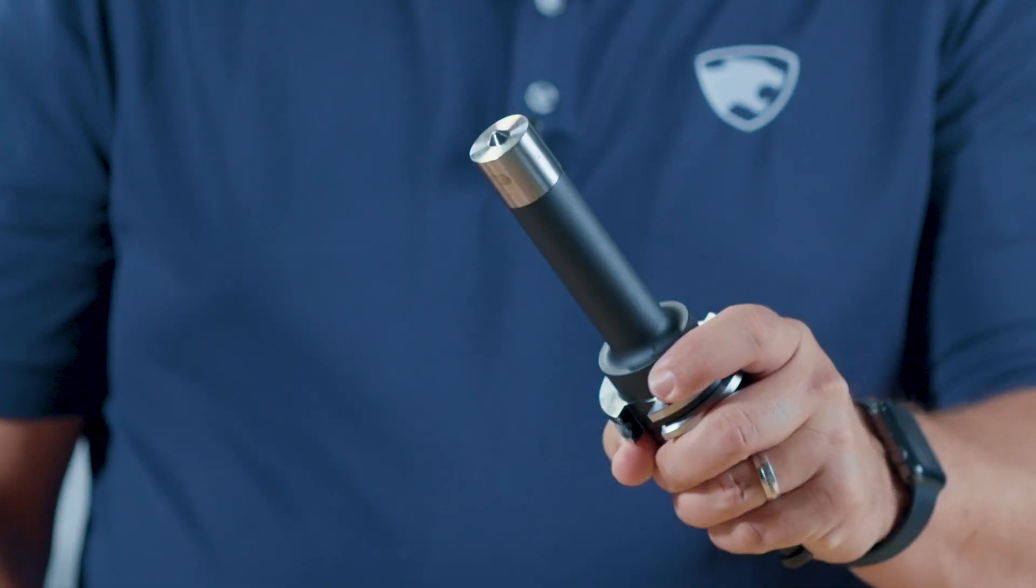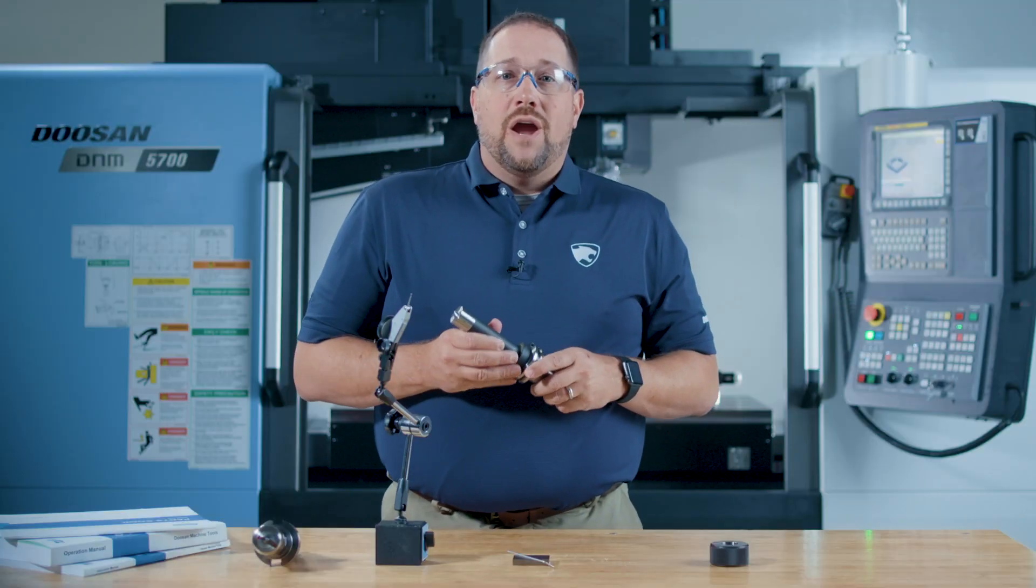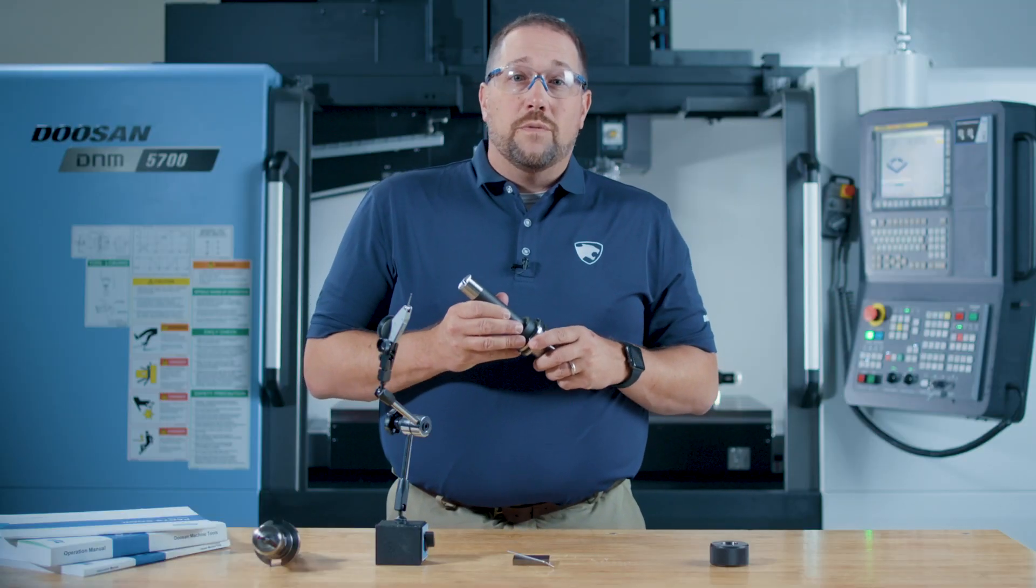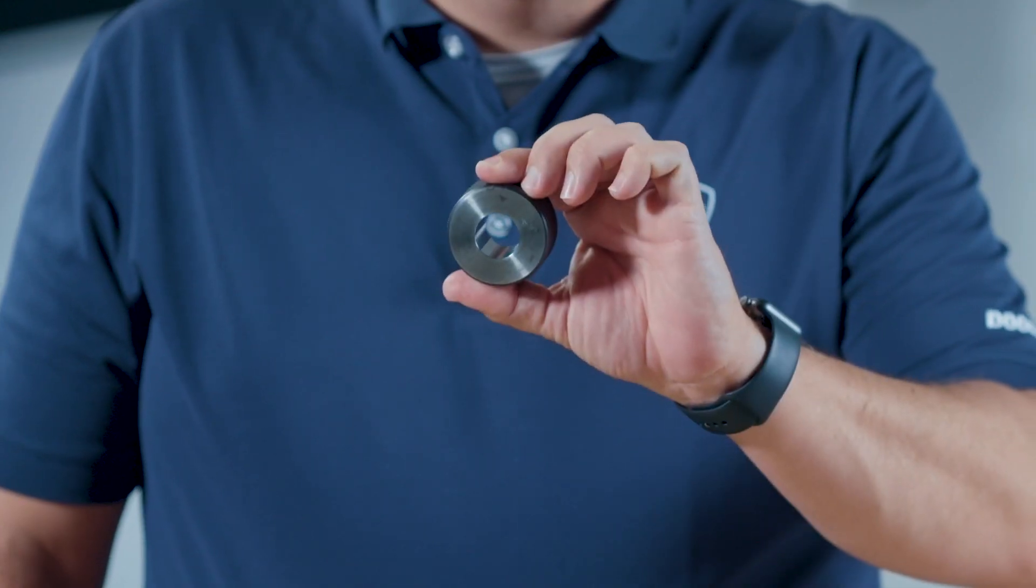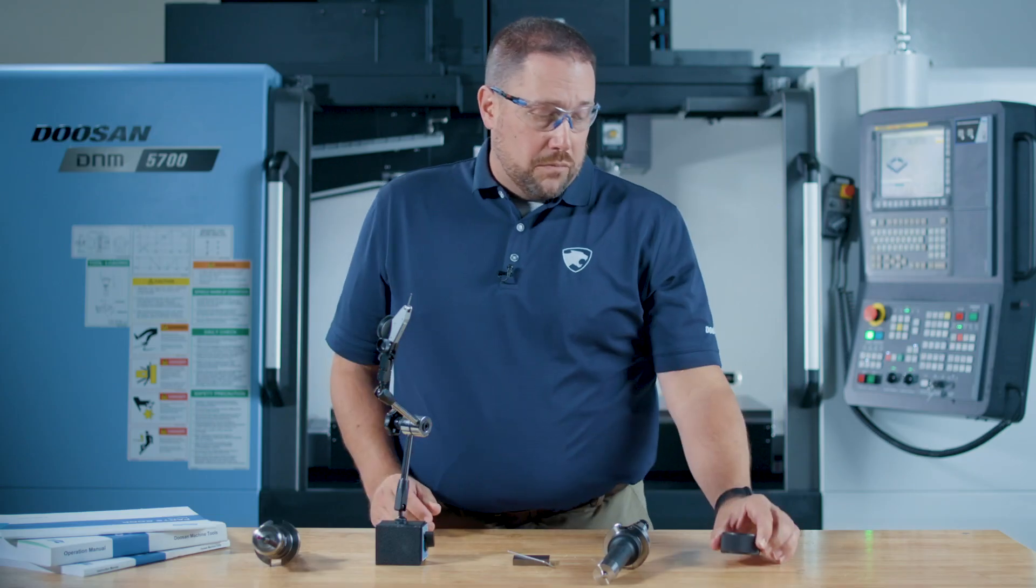Third, you need a master tool with a known diameter and known distance on the tool from the gauge line of the machine for calibrating your toolsetter. And last, you need a ring gauge with a known diameter for calibrating your probe. Have you got all that? Great!